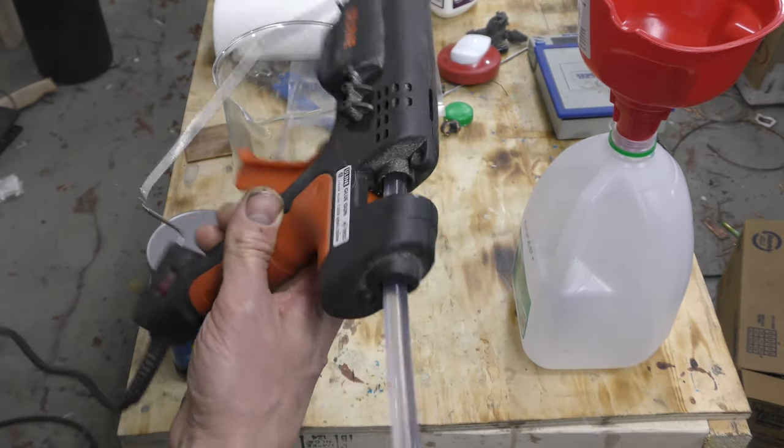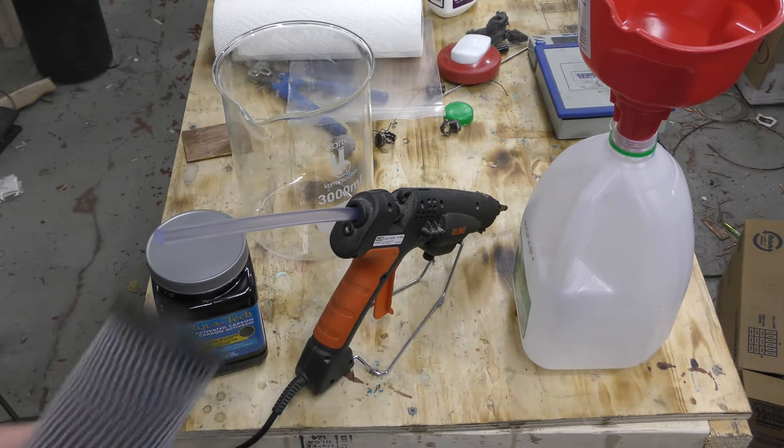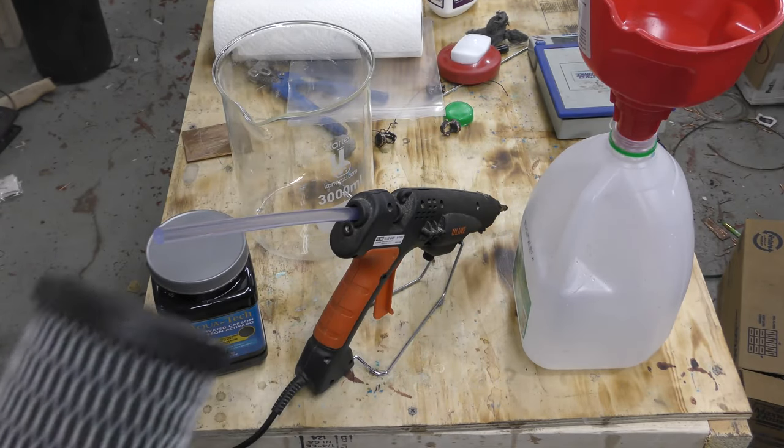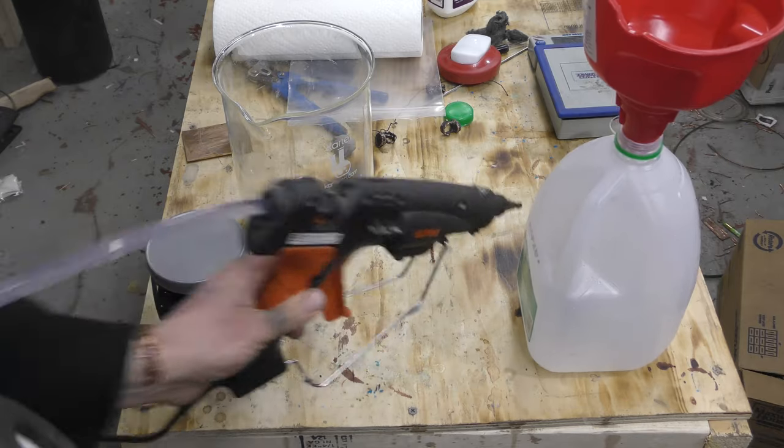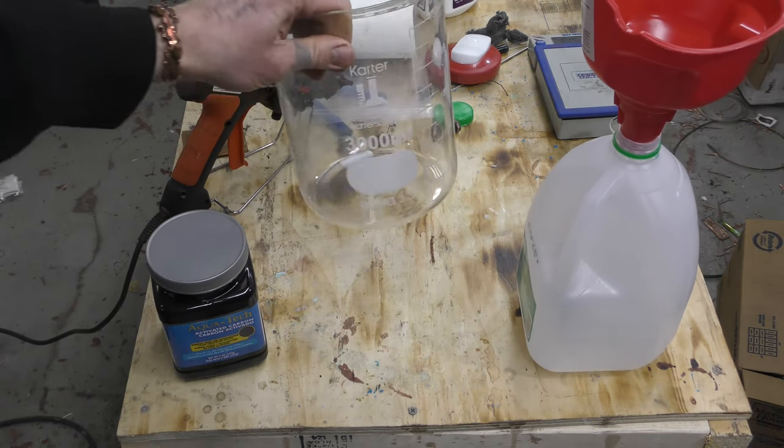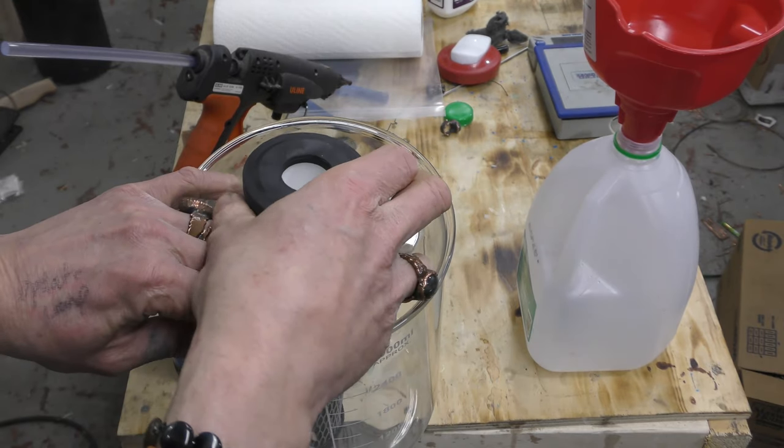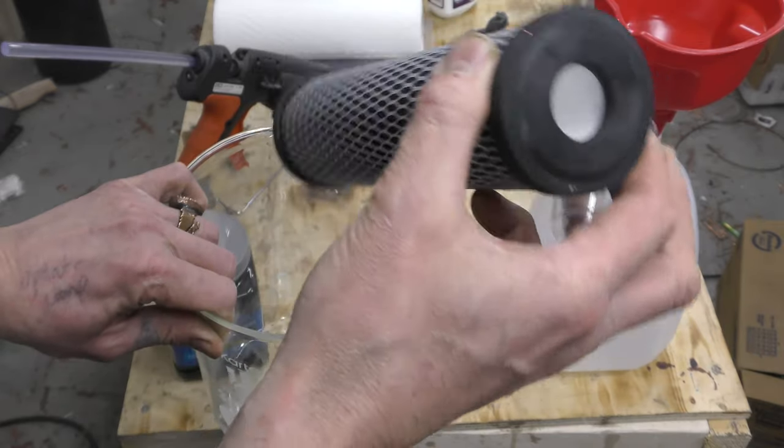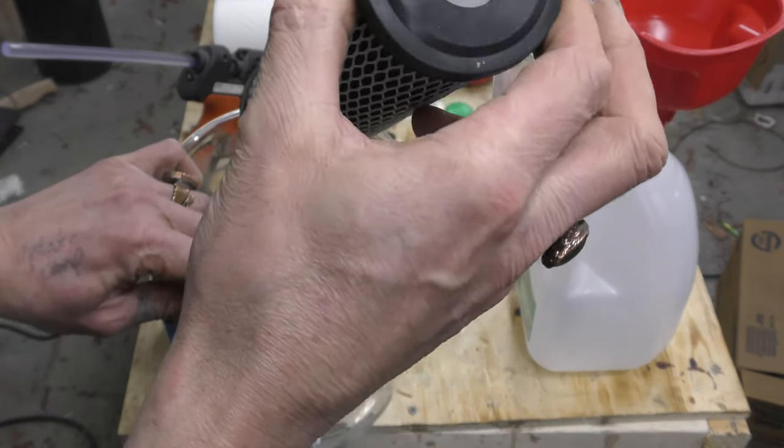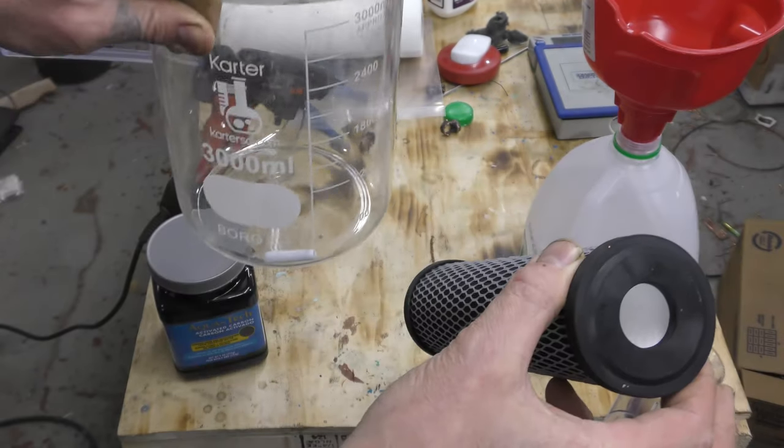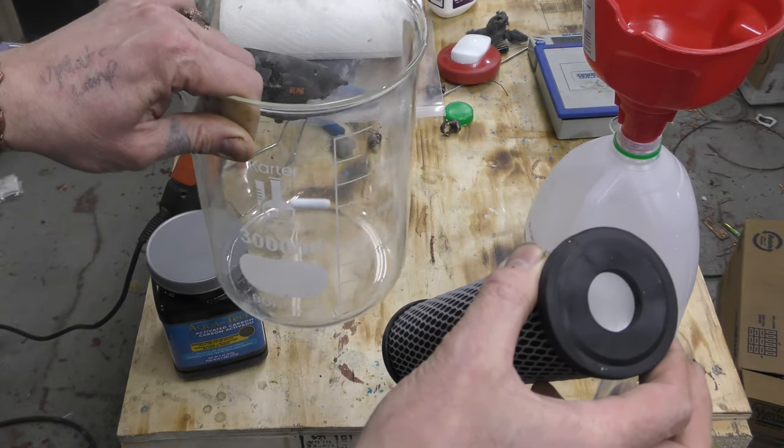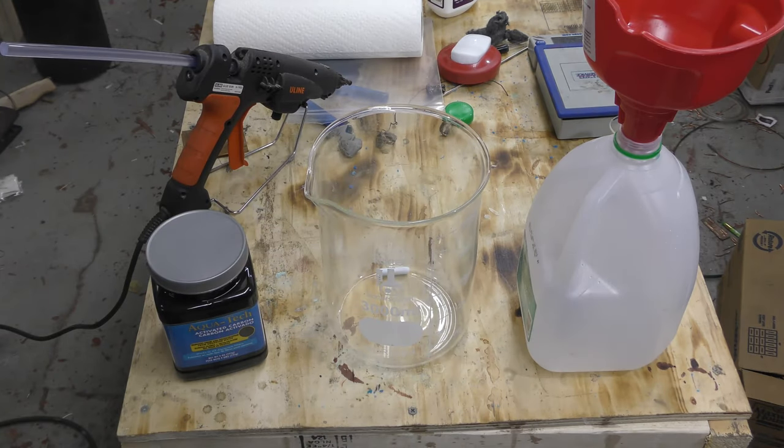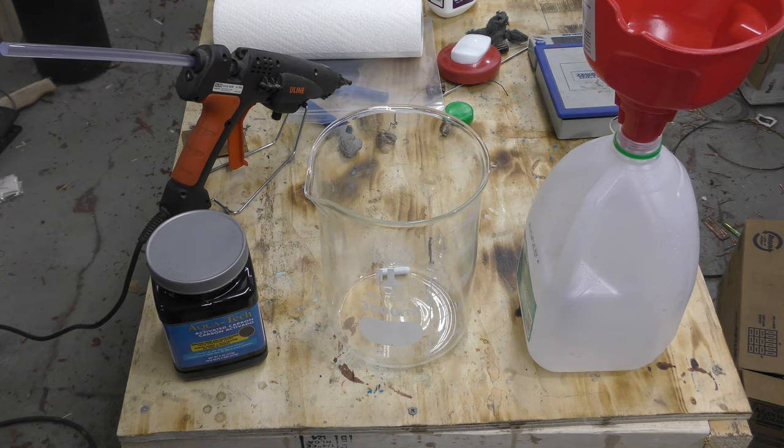Once it's warmed up and you have all your supplies - one of these, one of those, and a large vessel - whatever this sets into, whether it be a milk jug with the top cut off or whatever amount of liquid you are filtering, it needs to be double that volume.